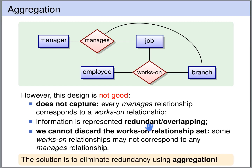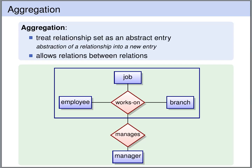The solution is to eliminate this redundancy by using aggregations. Aggregations allow us to treat relationship sets as abstract entity sets. We indicate an aggregation by drawing a box around a relationship set, thereby lifting the works-on relationship set to an abstract entity set. Now we can connect the manager's relationship set to this abstract entity set. So aggregations allow us to introduce relations between relations.